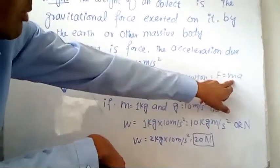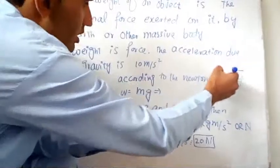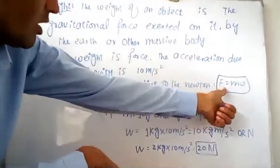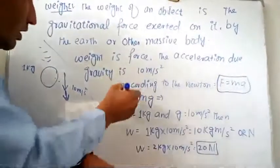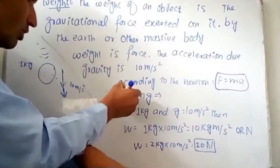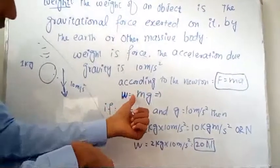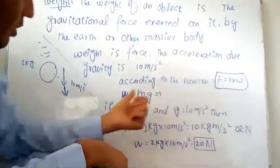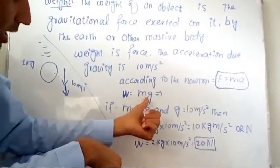If the mass of the body is constant, this equation is known as Newton's second law: F equals ma. Now we will replace force with weight W, so W equals mg. Weight is also a force, so W equals mg.